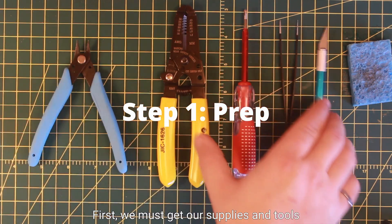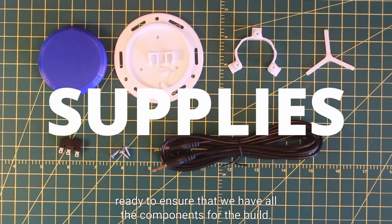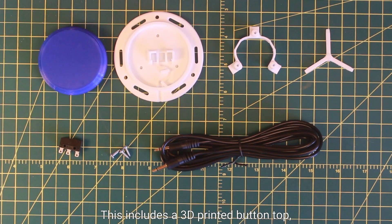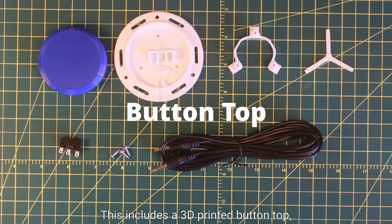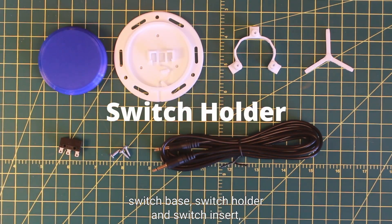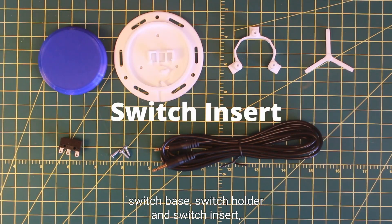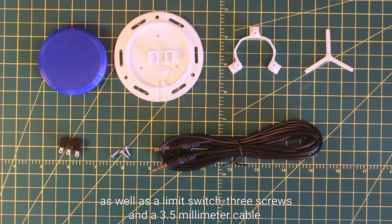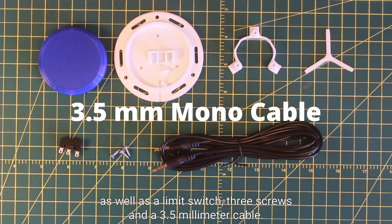First we must get our supplies and tools ready to ensure that we have all the components for the build. This includes a 3D printed button top, switch base, switch holder, and switch insert, as well as a limit switch, three screws, and a 3.5 millimeter cable.